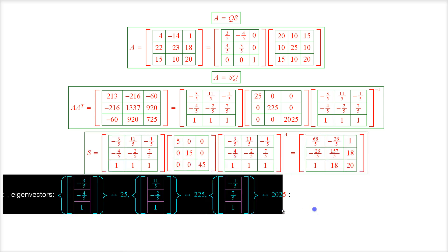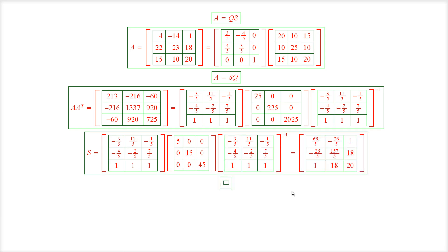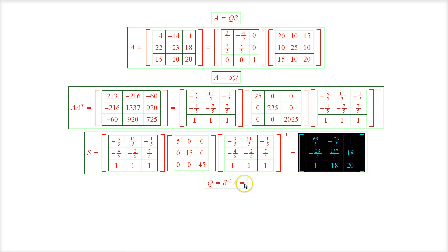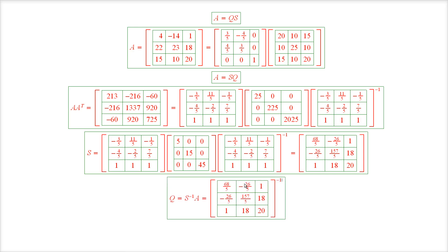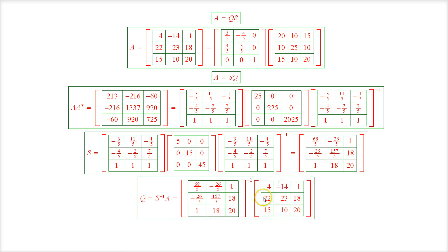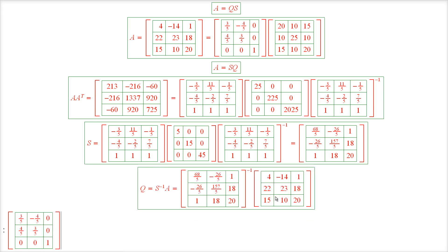And finally to determine the matrix Q, which of course equals the product S inverse A. So here we go. Q equals the inverse of the symmetric matrix S times the matrix A itself. And the result is, lo and behold, it's the same matrix Q as before.